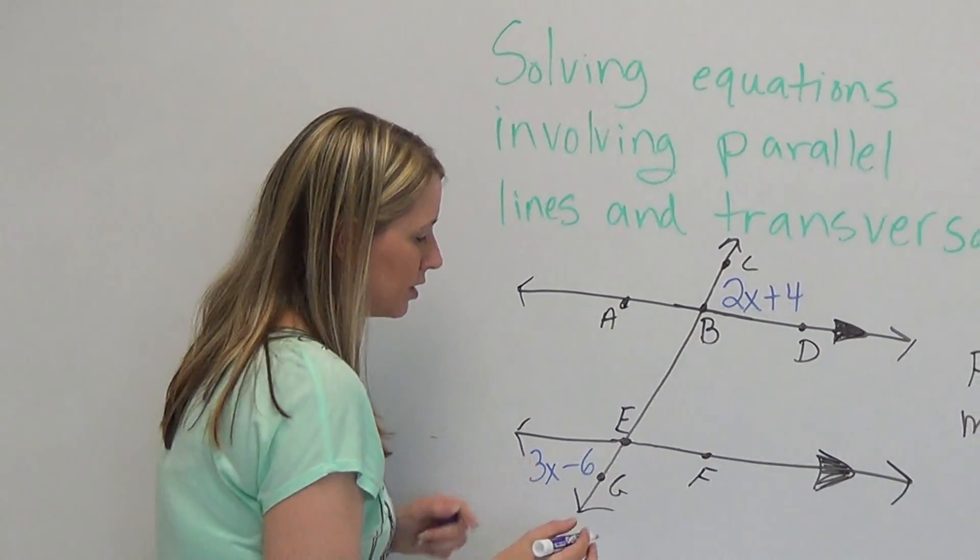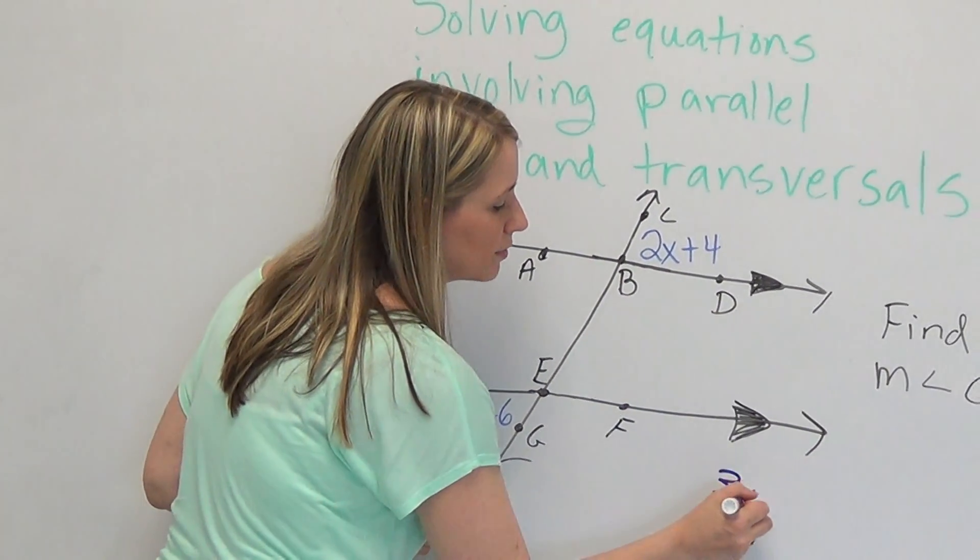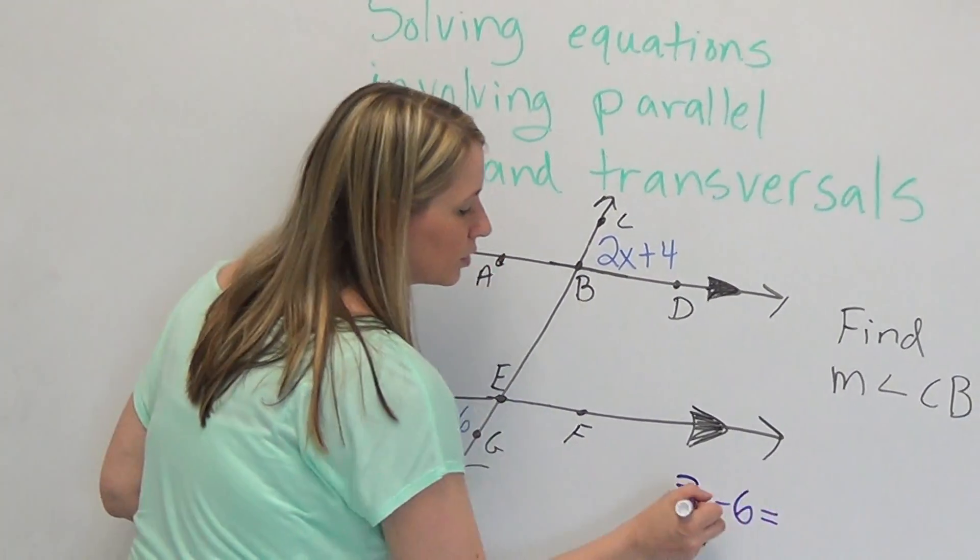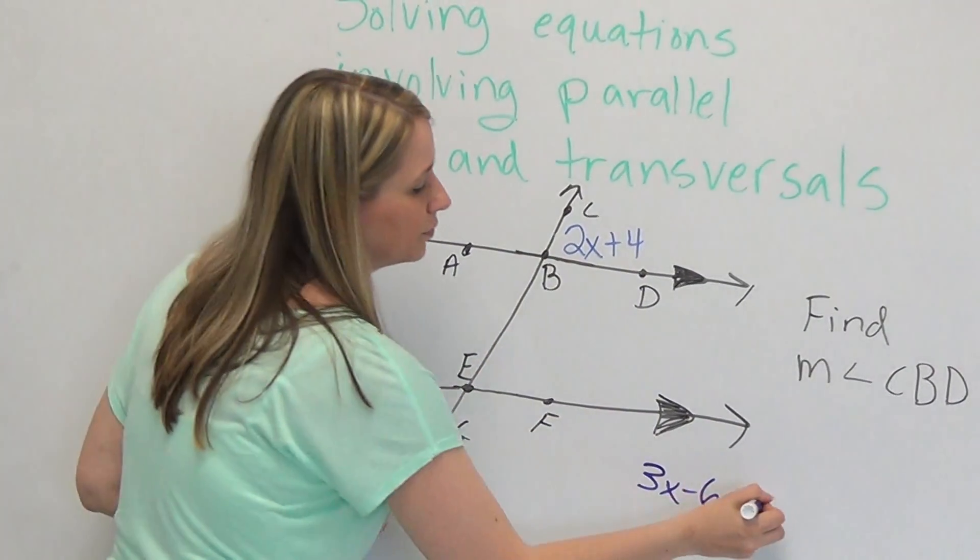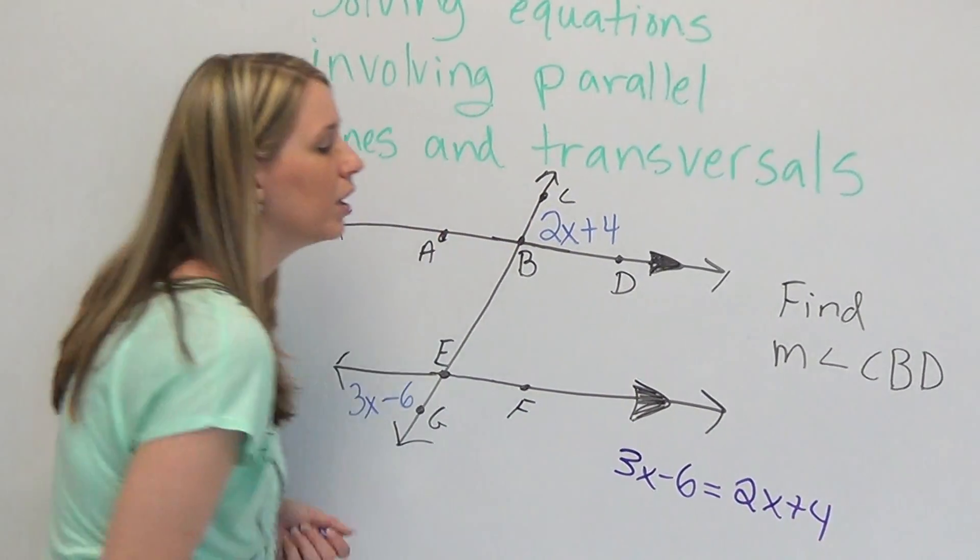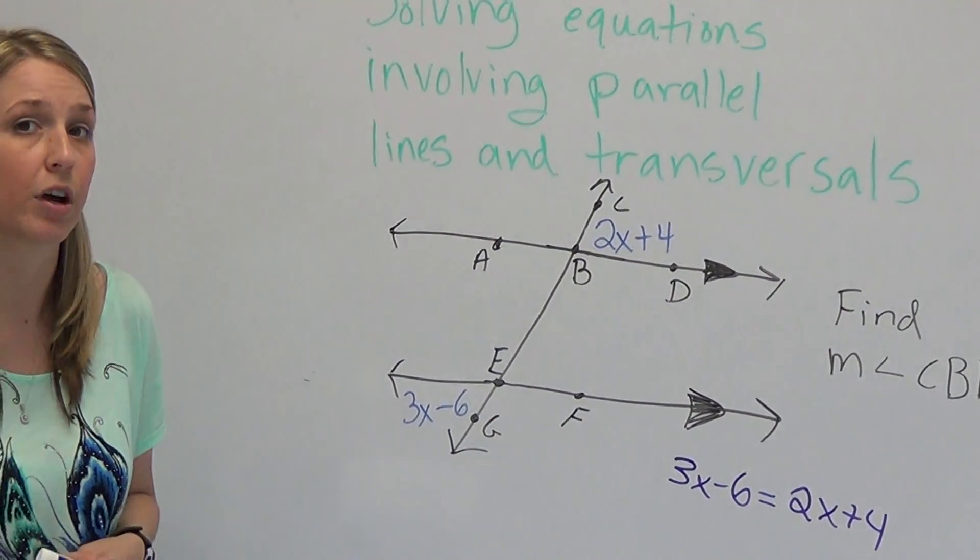So what we get is this expression, 3x minus 6, is equal to this expression, 2x plus 4. Now we've got an equation we can actually solve.